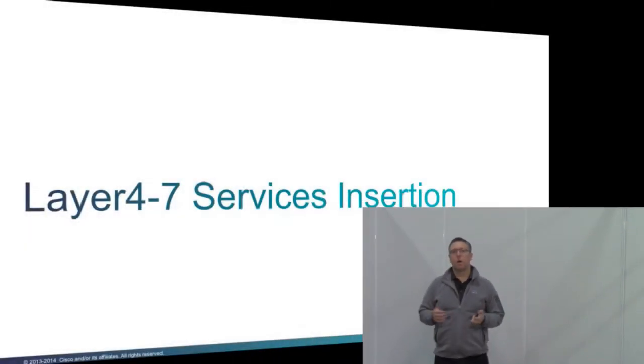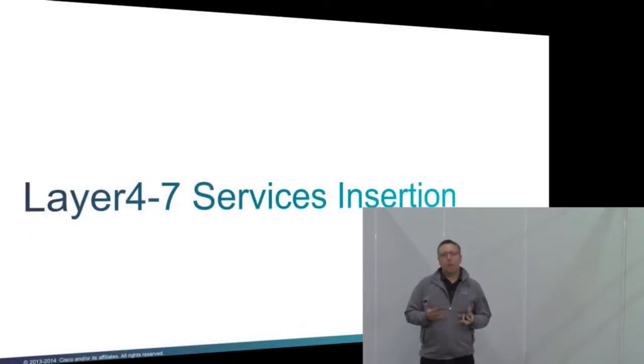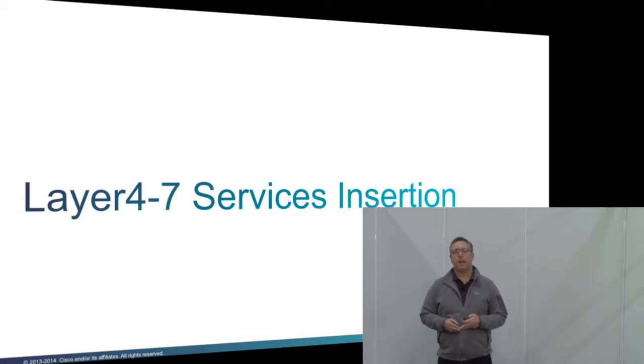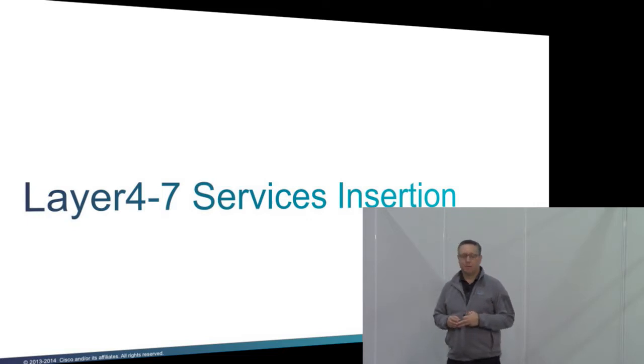Welcome. My name is Lukas Kreidinger. I'm a principal engineer as part of the Cisco data center group. Today we're going to talk about layer 4 to 7 services insertion in regards to the VXLAN eVPN data center fabric. We get a lot of questions about how to attach or integrate a firewall into a network with distributed IP and ECMP gateway. Today we're going to show you two of the main use cases.